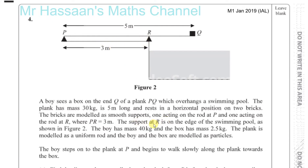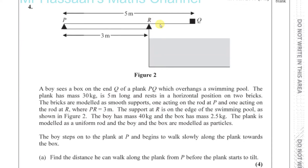The support at R is on the edge of the swimming pool, as shown in figure 2. The boy has a mass of 40 kilograms, and the box has a mass of 2.5 kilograms. The plank is modeled as a uniform rod, and the boy and the box are modeled as particles. The boy steps onto the plank at P and begins to walk slowly along the plank towards the box. Find the distance he can walk along the plank before the plank starts to tilt.